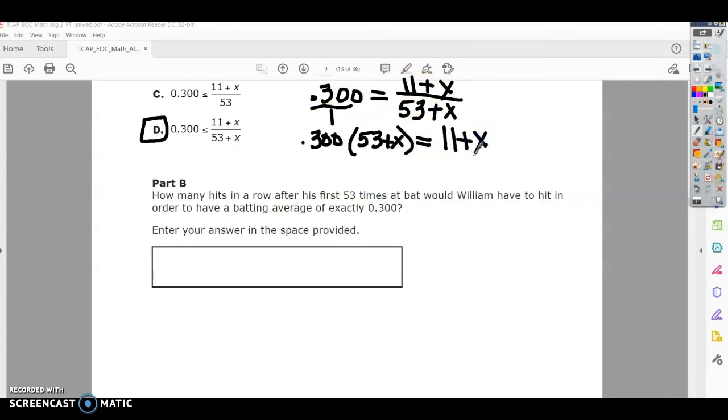If you take 0.3 times 53, you're going to get 15.9, and then 0.3 times X is plus 0.3X. Now I'm trying to solve for X, so I need to get X on the same side. I'm going to subtract the 0.3X.